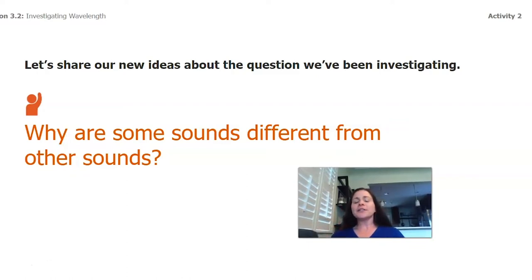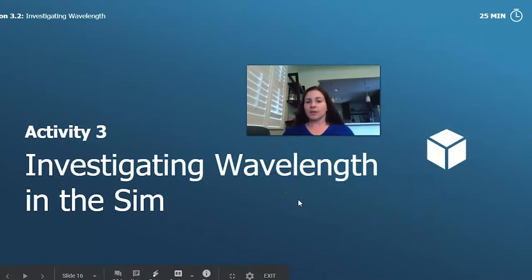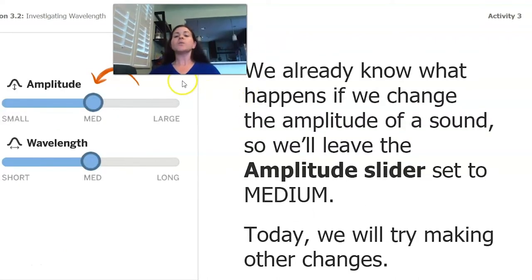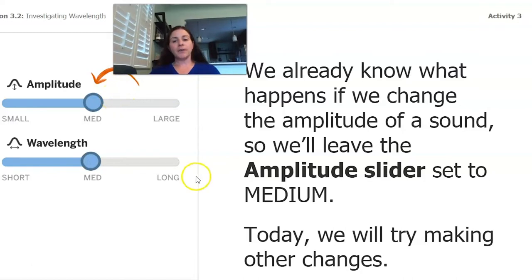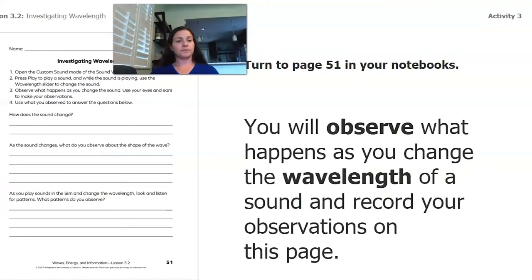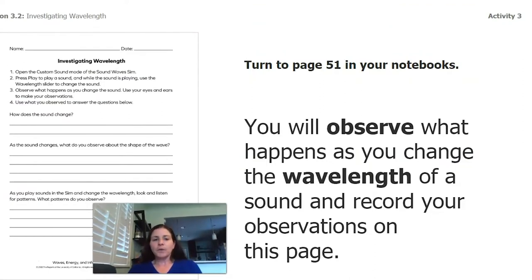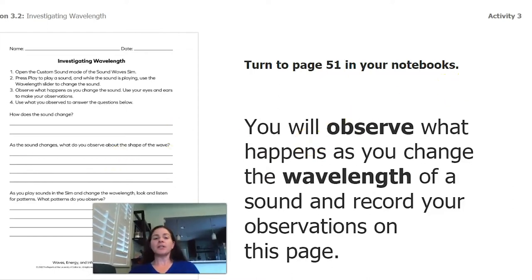That makes me wonder: why are some sounds different from other sounds? We knew about volume and amplitude — how big or loud a wave is. So what else? To investigate this, we're going to go into the sim and use the custom sound mode to investigate what causes sounds to be different. We already know what happens when we change amplitude — the wave gets taller or shorter and it's louder or quieter. So we're going to leave amplitude alone and look at wavelength today. If you have your investigation notebook, go to page 51. We're going to observe and record what happens when we change the wavelength of a sound.